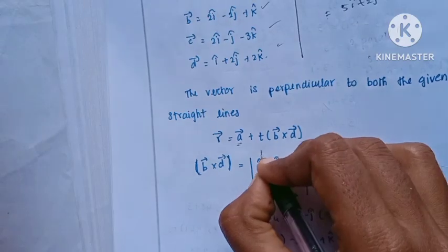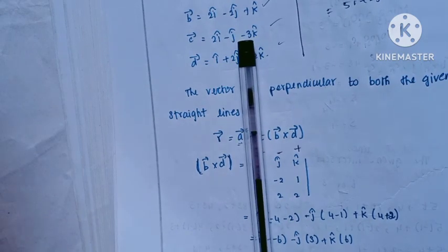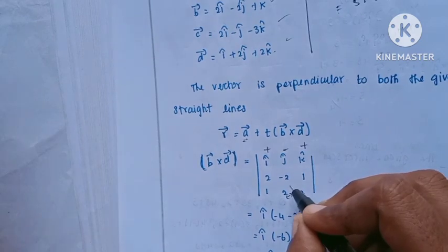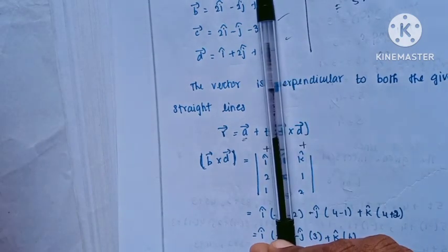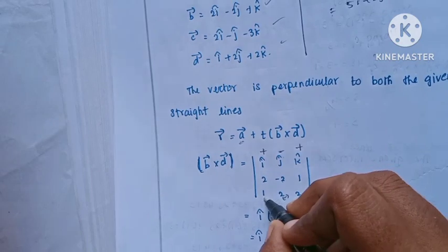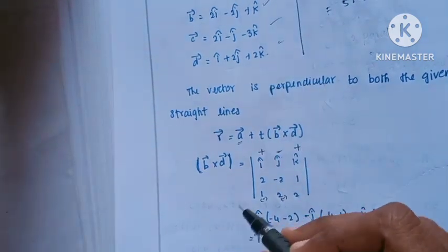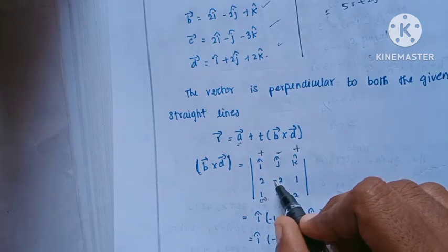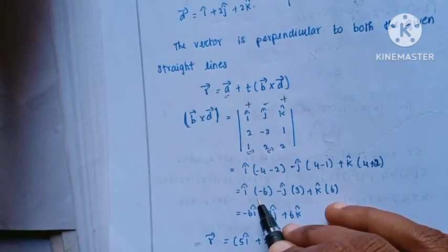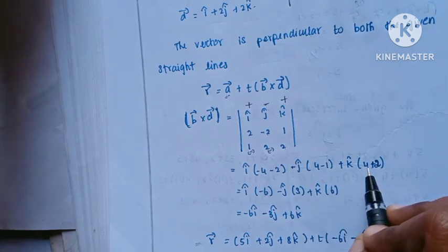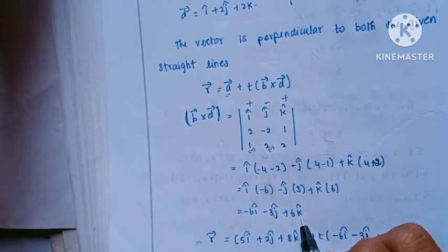Expanding the determinant: i into ((-2)(2) minus (1)(1)) minus j into ((2)(2) minus (1)(1)) plus k into ((2)(2) minus (-2)(1)). Simplifying: i(-4 minus 2) minus j(4 minus 1) plus k(4 plus 2), giving minus 6i minus 3j plus 6k.